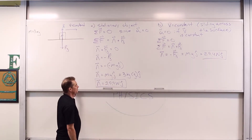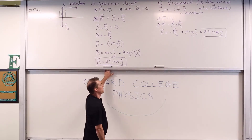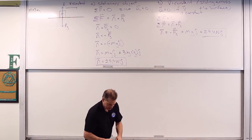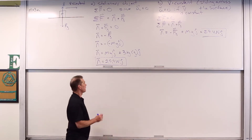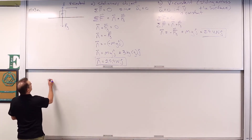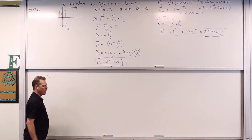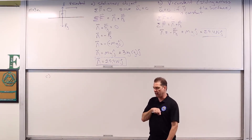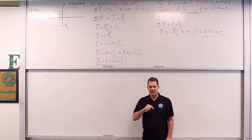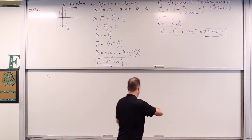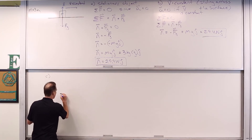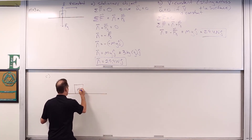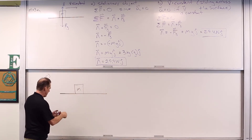That force is still zero — constant velocity. Now let's take ourselves to part C. I'm going to take this object and push downward on it with a force of 8 Newtons, then ask: what's the normal force now? Same object, mass is 3 kilograms.